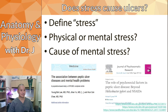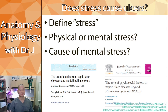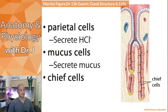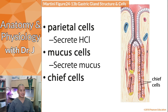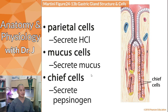To summarize: mucus is more than just a slimy substance — it is a critical protective layer for your stomach. Moving on, chief cells are another cell type found throughout the inner part of the gastric pits. Chief cells secrete an important enzyme or protein called pepsinogen.